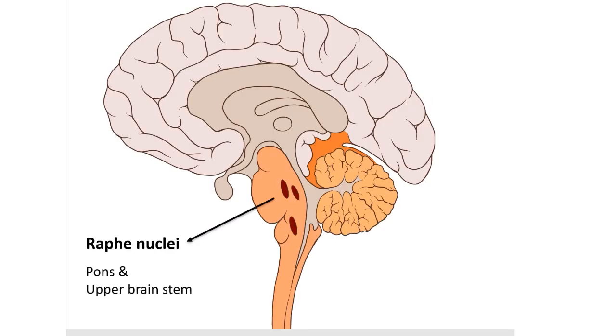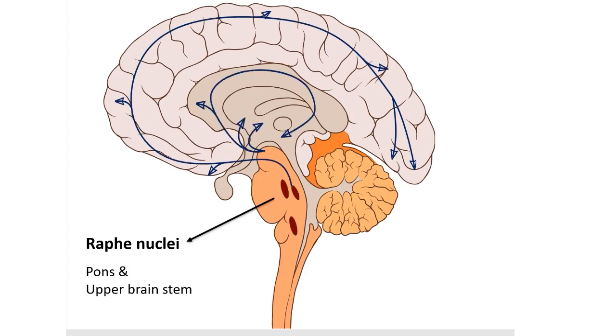Coming to serotonergic transmission. Serotonin is chemically 5-hydroxytryptamine or 5-HT. The serotonin-containing neurons are located in 9 nuclei, raphe nuclei, which are located in pons and upper brainstem. The rostrally located nuclei extend to different regions of cortex, basal ganglia, hypothalamus, hippocampus, limbic system, etc., whereas the caudally located nuclei project into cerebellum, midbrain, and spinal cord.